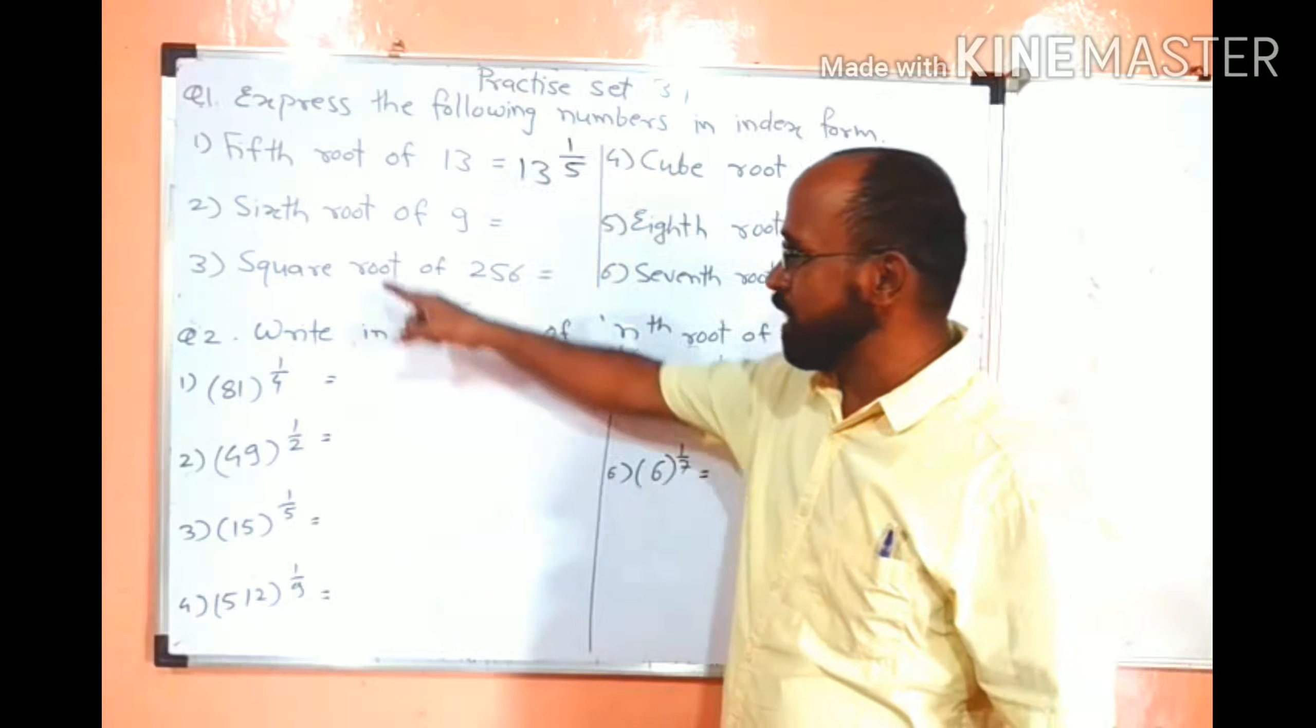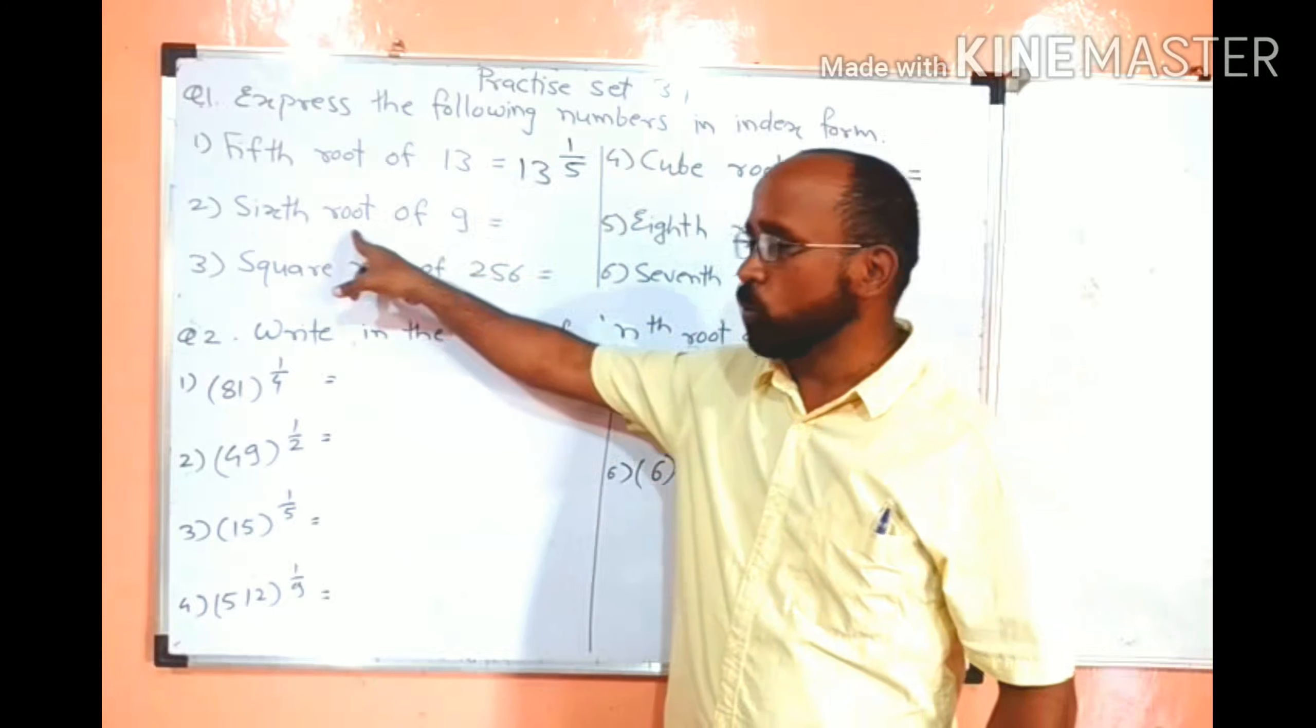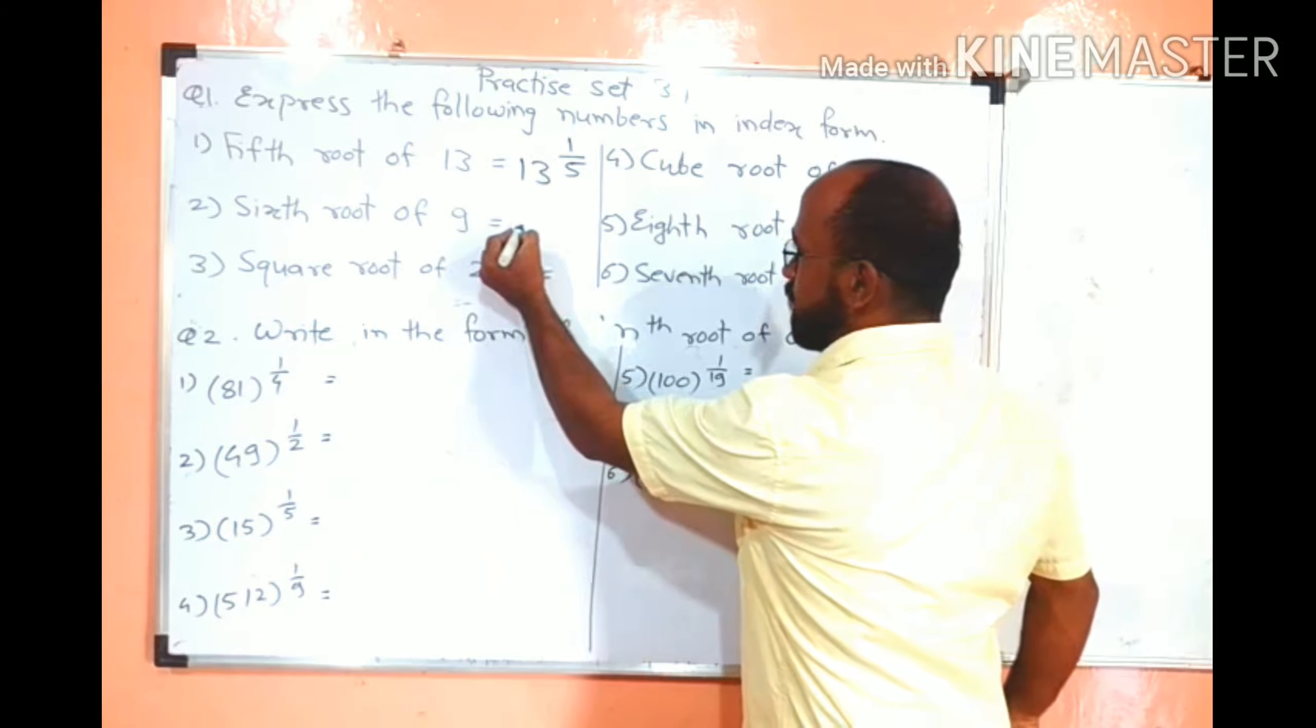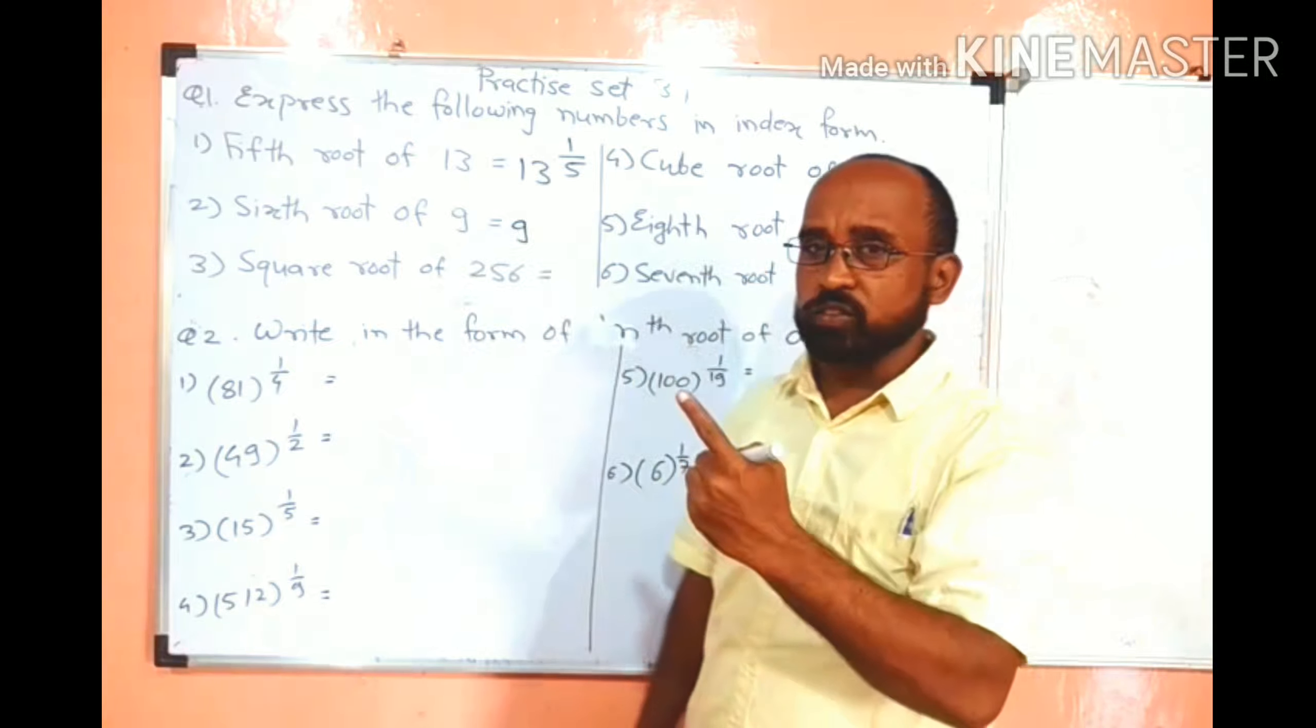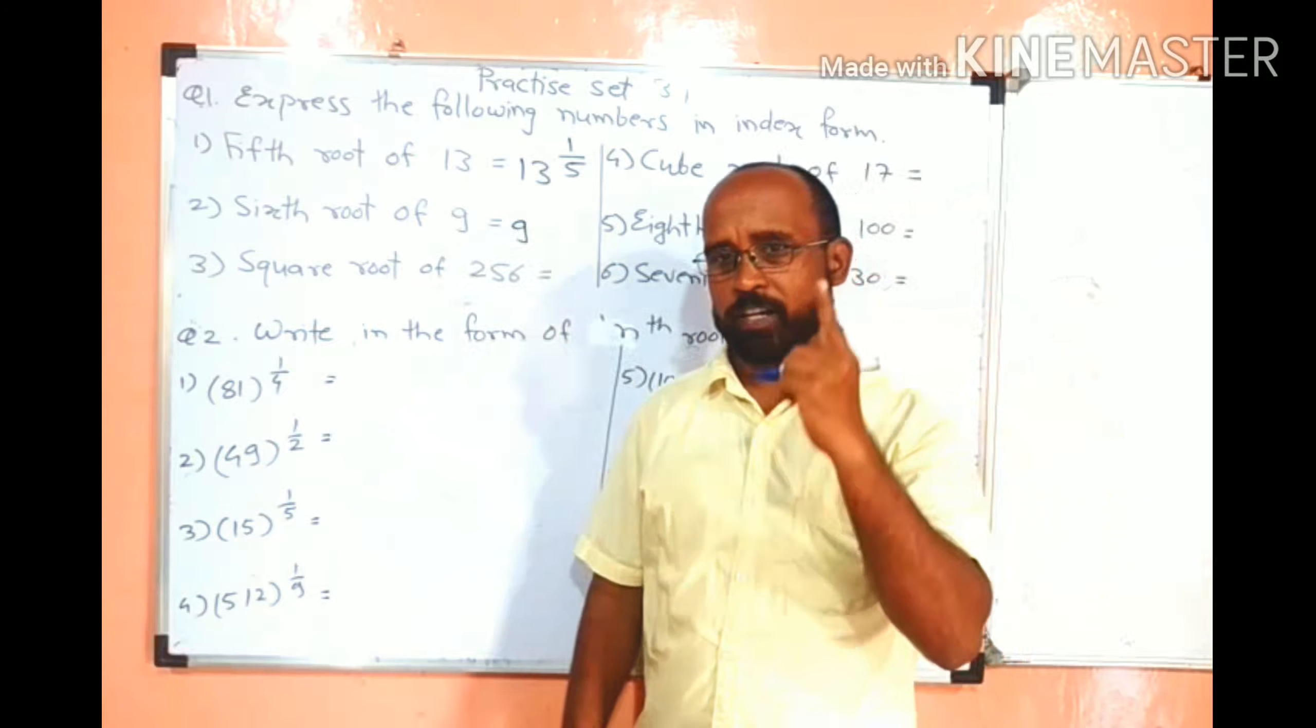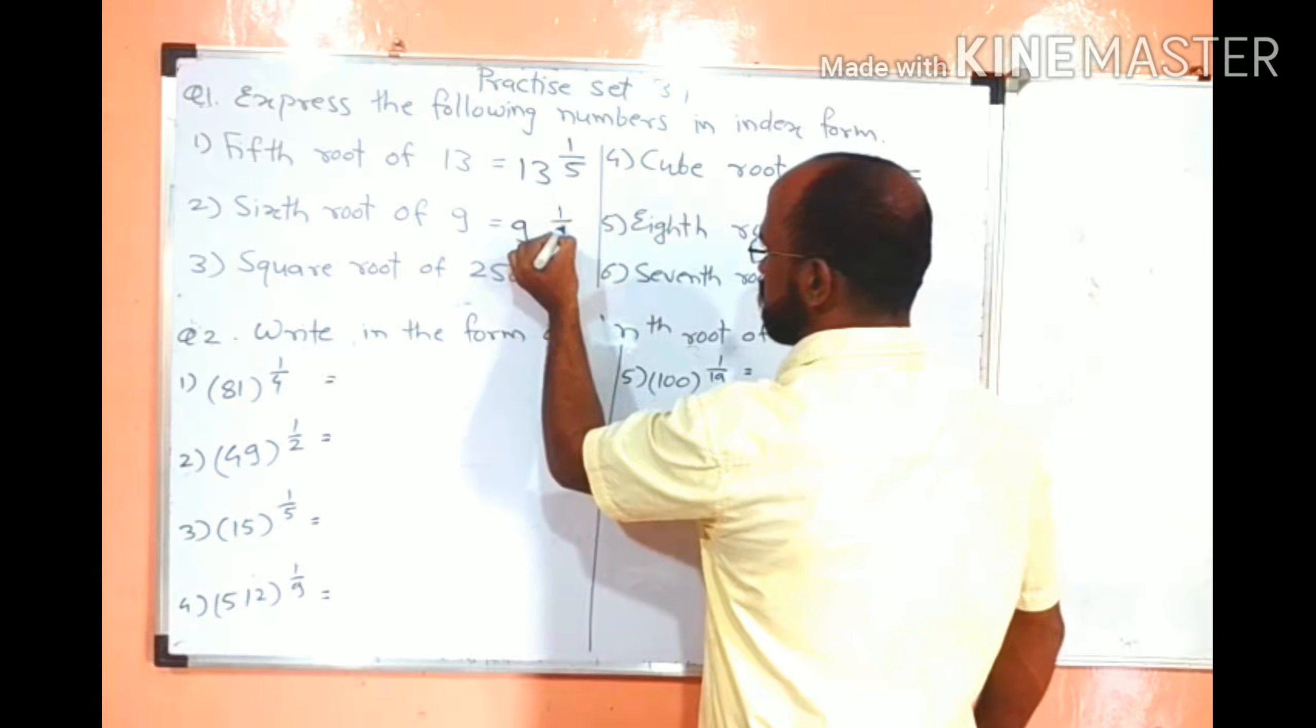6th root of 9. Base is 9, root is 6th. So write 9 as base, 6th root means raised to 6 or 1 upon 6? Definitely 1 upon 6. So 9 raised to 1 upon 6.